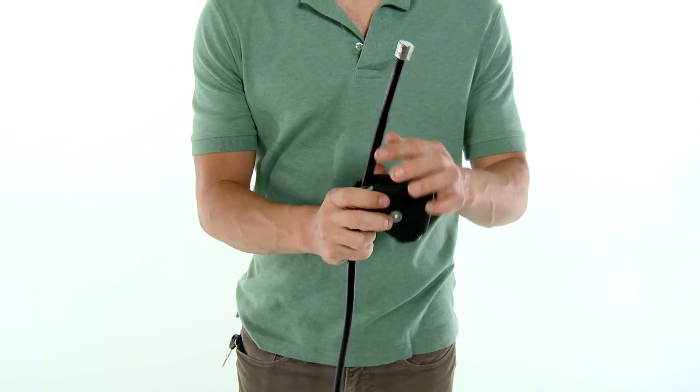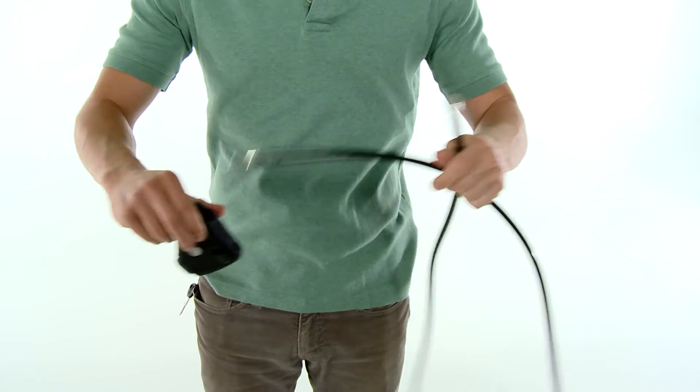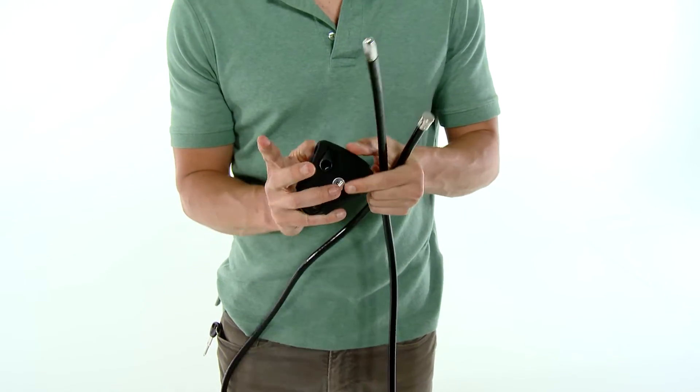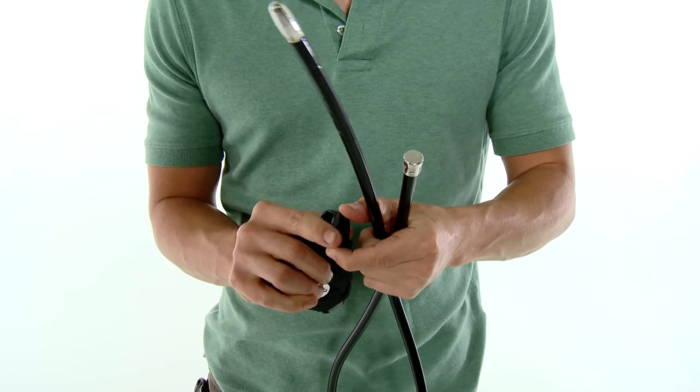To use the dual loop system, first remove the cable from the locking mechanism, then ABUS has come up with a nifty system of a double loop.